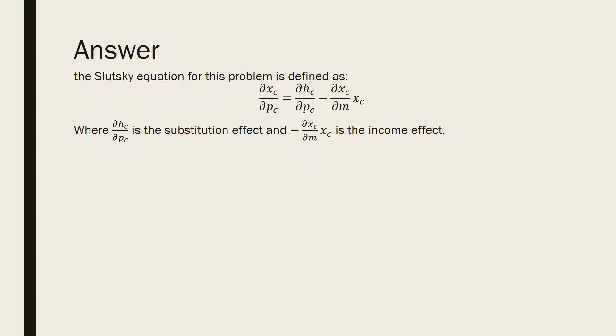So the Slutsky equation for this problem is defined as the following, where the partial derivative of the Hicksian demand for this company's cars with respect to the price of this company's cars is the substitution effect, and the negative partial derivative of the Marshallian demand for this company's cars with respect to income times the estimated demand for the company's cars is the income effect.